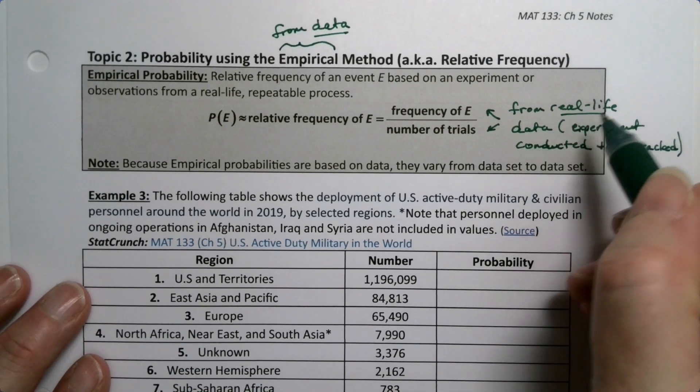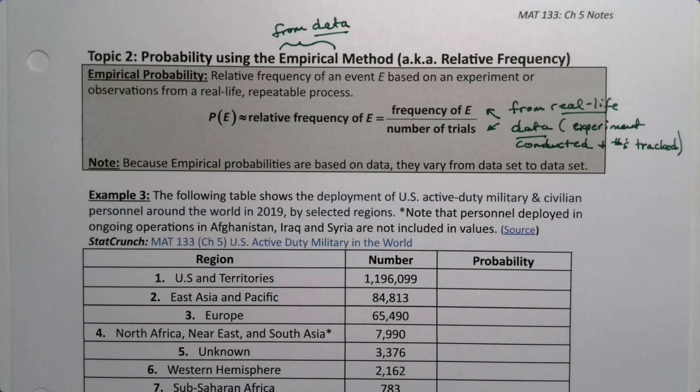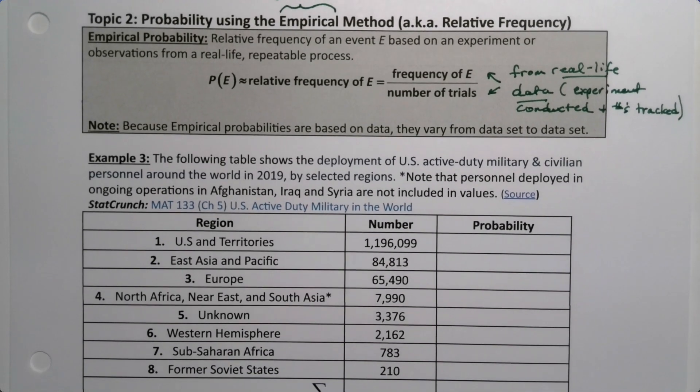That's the key with empirical probabilities - it's from real-life data. Now you've actually already found this in chapter 2 and chapter 3 when you were finding relative frequency. Relative frequency is empirical probability. Now because these probabilities are found based on data, that data can vary from data set to data set, so the probabilities themselves can vary.